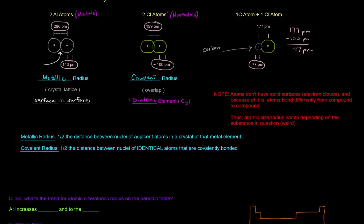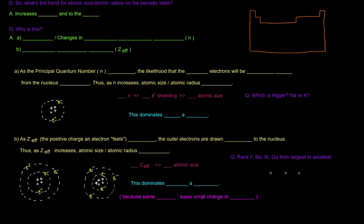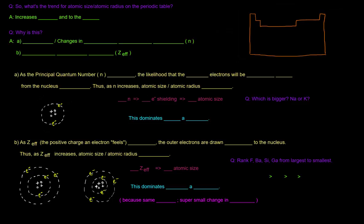So next up is what's going on with the trend. So what's the trend for atomic size or atomic radius on the periodic table? Well, it increases down and to the left.